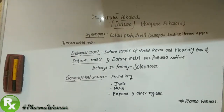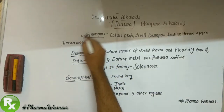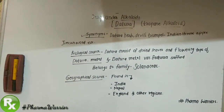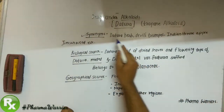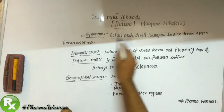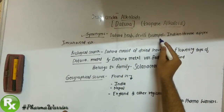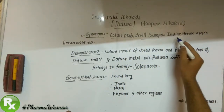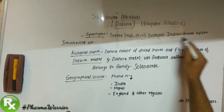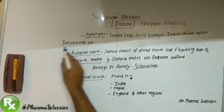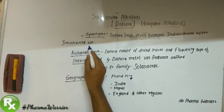Now we will discuss the pharmacognosy aspects of Dhatura. First, the synonyms: Dhatura has several synonyms — Kala Dhatura, Devil's Trumpet, Indian Thorn Apple, Jimsonweed, and others.